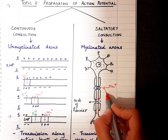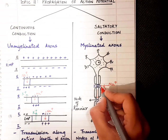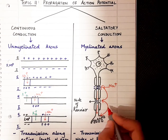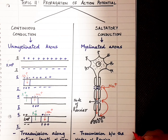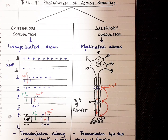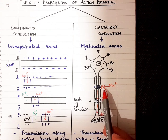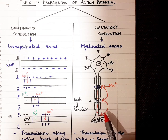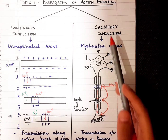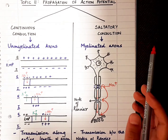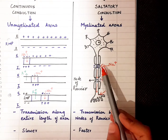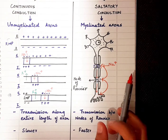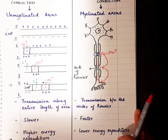The action potential passes on from each node of Ranvier — that is why it is called saltatory conduction. 'Saltatory' comes from a word meaning 'to leap,' so the action potential basically leaps from one node of Ranvier to the next. This occurs in myelinated axons. Once the sodium ions pass to the next node, the previous node gets repolarized and then returns to its resting state.